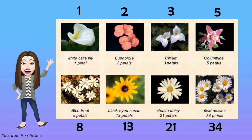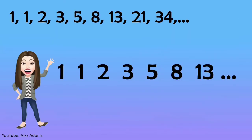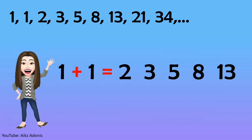but it is actually forming a pattern. In this sequence, the next number is found by adding up the two numbers before it. For example, 2 is found by adding the two numbers before it: 1 plus 1 equals 2.